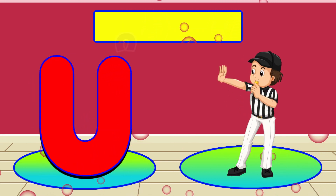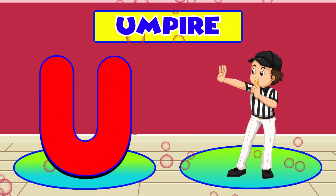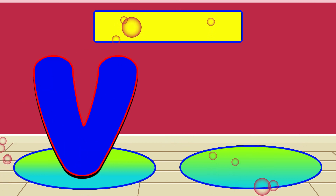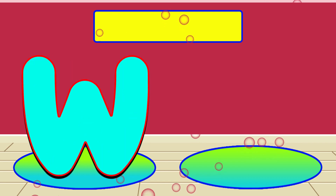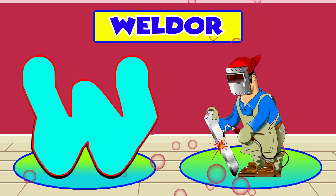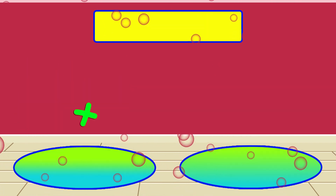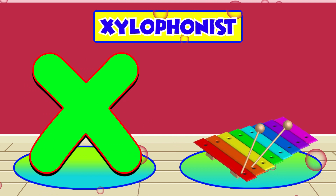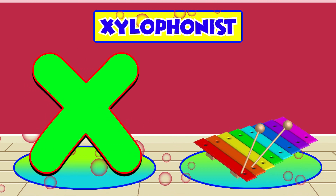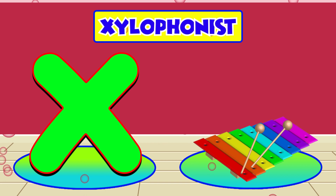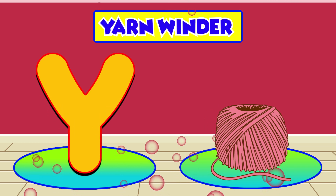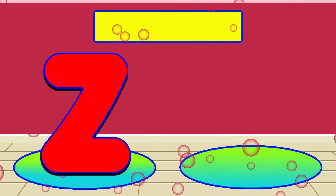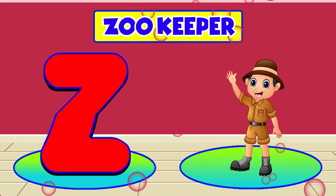U is for Umpire. U, U, Umpire. V is for Vendor. V, V, Vendor. W is for Welder. W, W, Welder. X is for Xylophonist. X, X, Xylophonist. Y is for Yarn Winder. Y, Y, Yarn Winder. Z is for Zookeeper. Z, Z, Zookeeper.